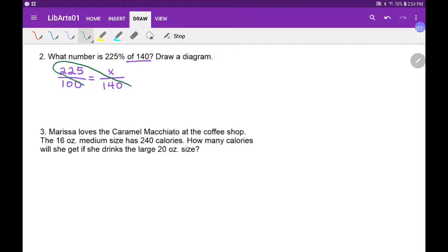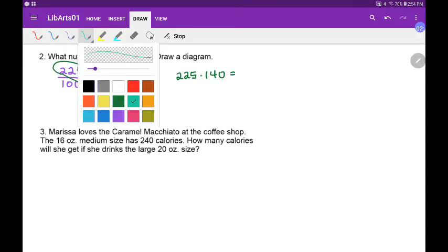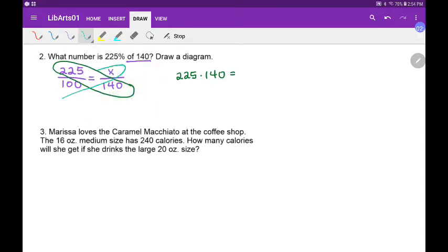We'll say 225 times 140 is equal to 100 times X, right? And then I don't want the 100 with the X. It's 100 times X, so I'm going to divide by 100.